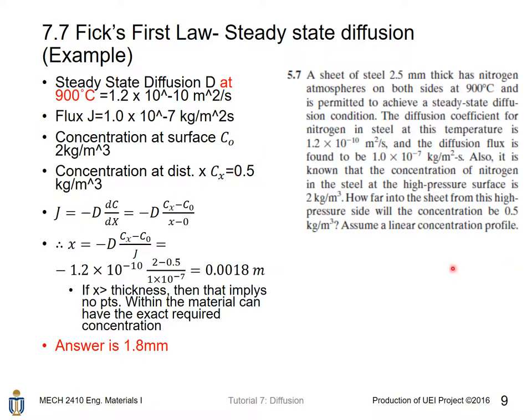Use the definition of concentration gradient, or definition of slope of a line, which is written here. Rearrange the term and find the value. Given that, we can find that x equals 0.0018 meter. And the answer is 1.8 millimeter.